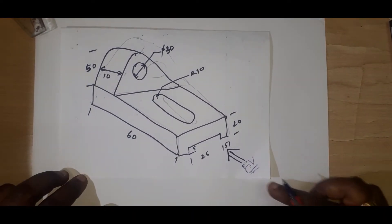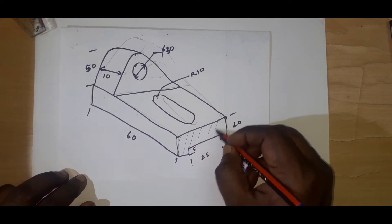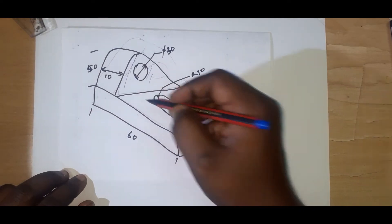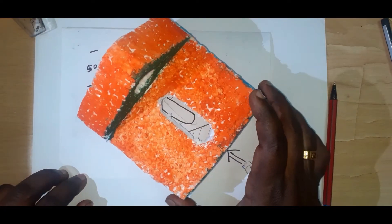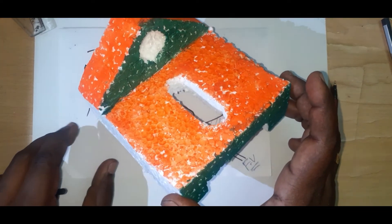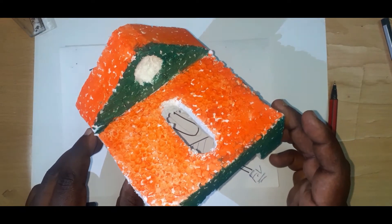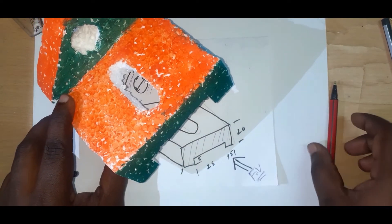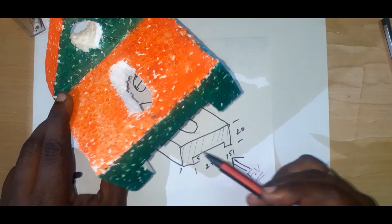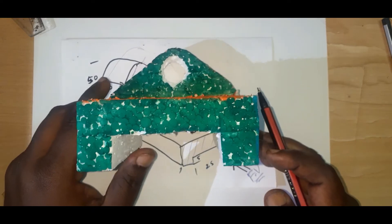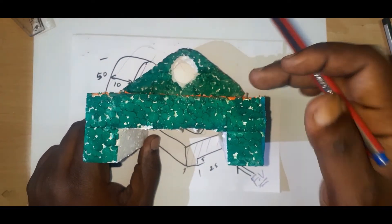In this front view direction, if you are going to see this object, this portion will be clearly visible. I made an object like the same — you can imagine this object. Here, this is the direction of the front view. While seeing from this front view you can see this green color, which will be visible. This is called the front view.